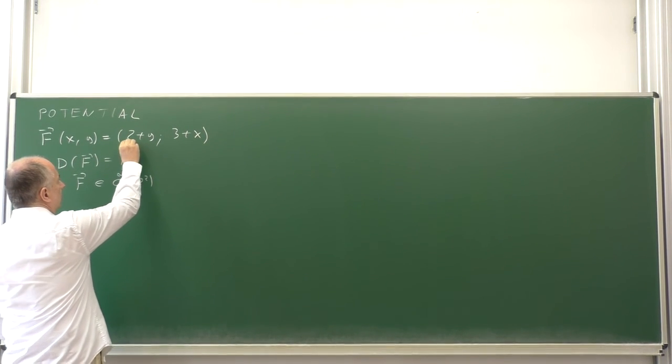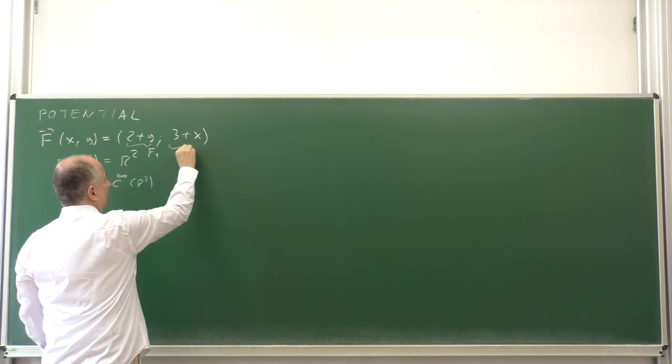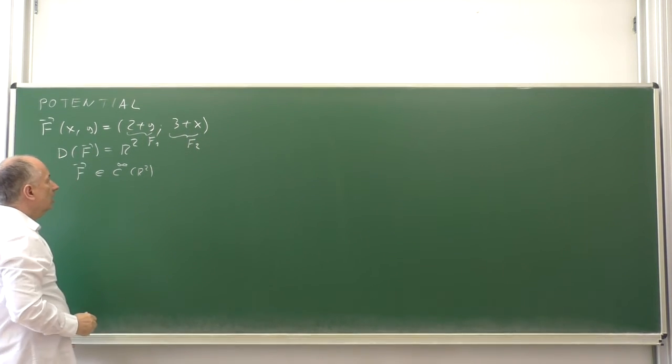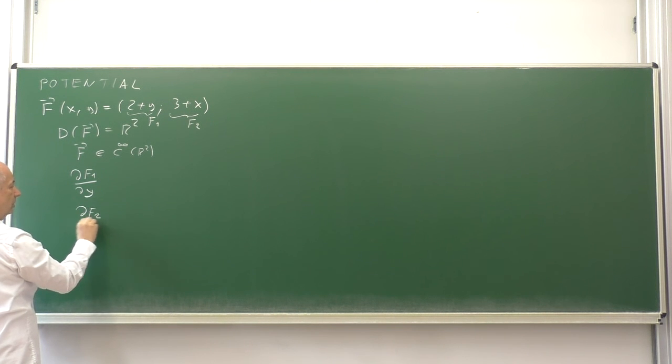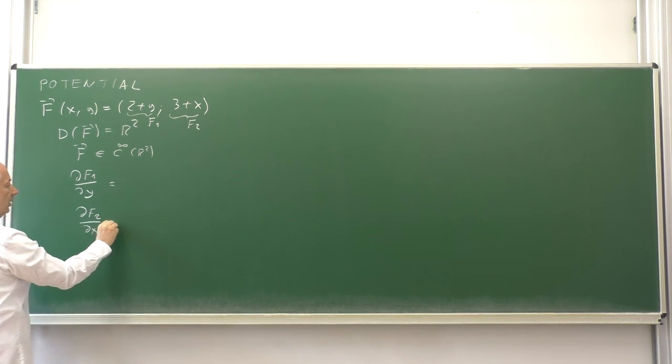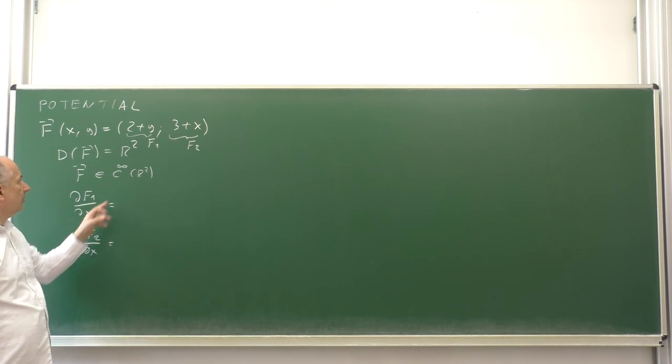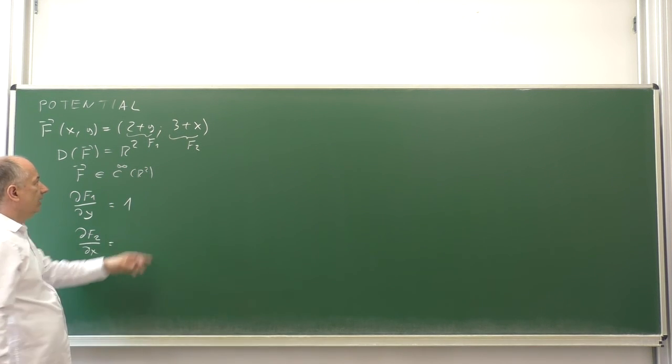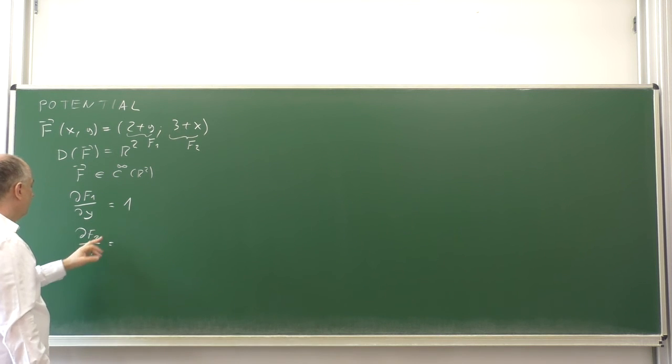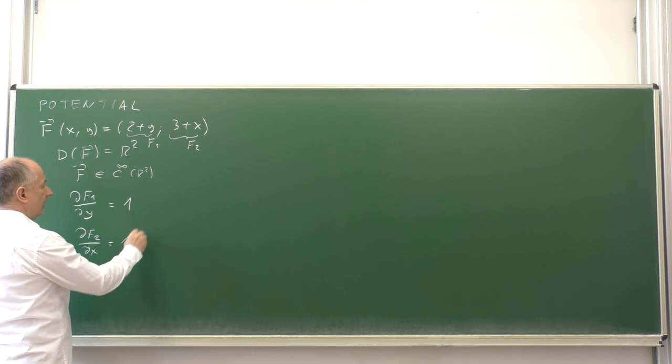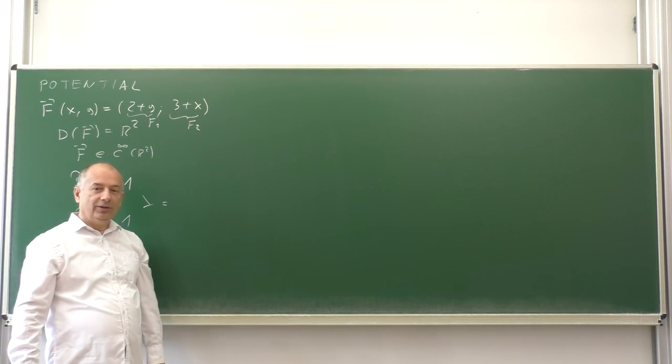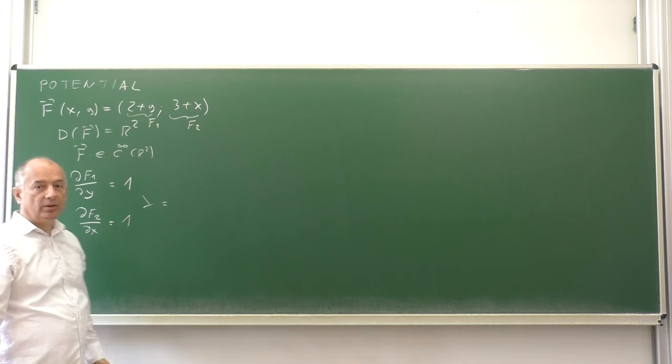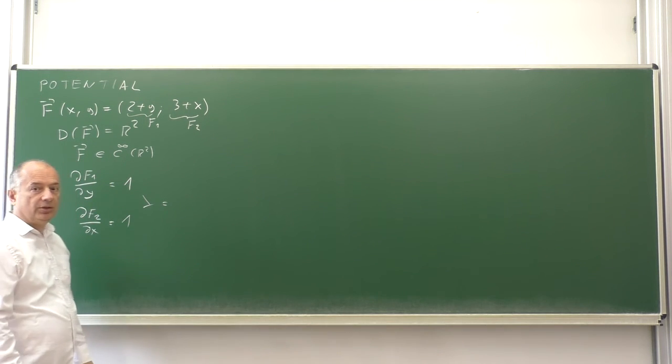If we denote the first component F1 and the second component F2, we test whether the partial derivative of F1 with respect to y equals the partial derivative of F2 with respect to x. The first component differentiated with respect to y gives 1, and the second component differentiated with respect to x gives 1. They are equal for all real x and y, which is an open simply connected set. So the potential exists.